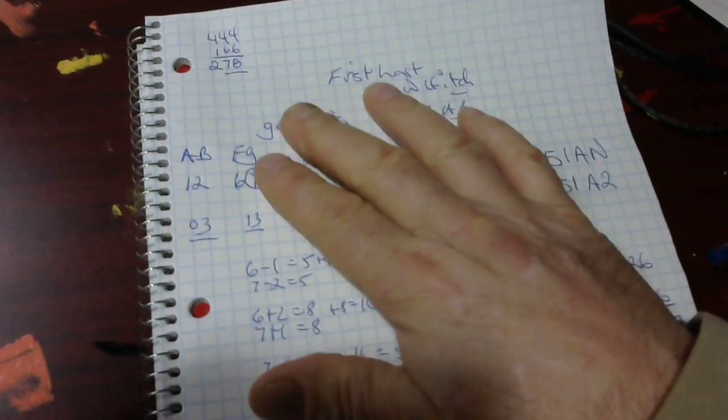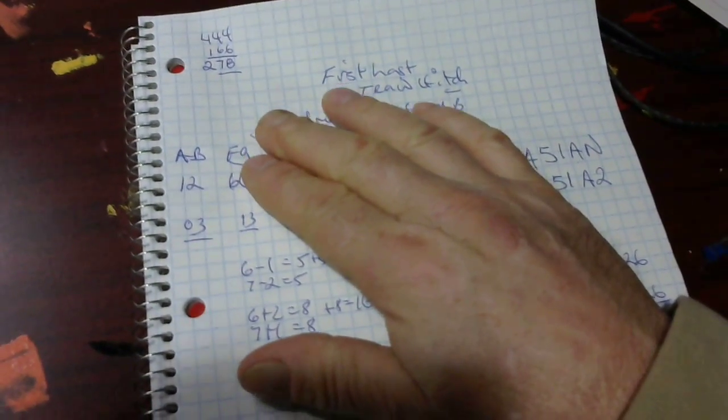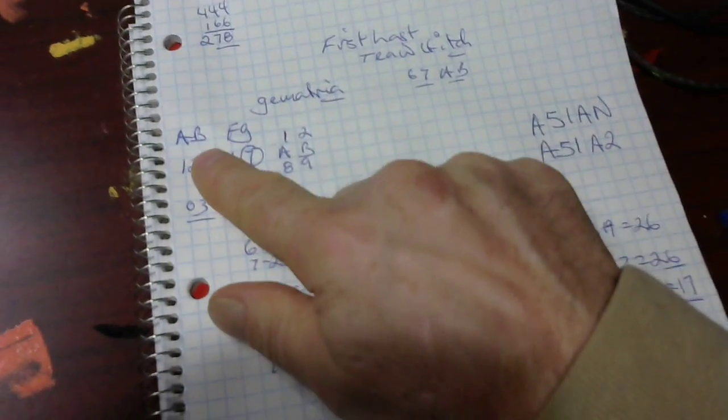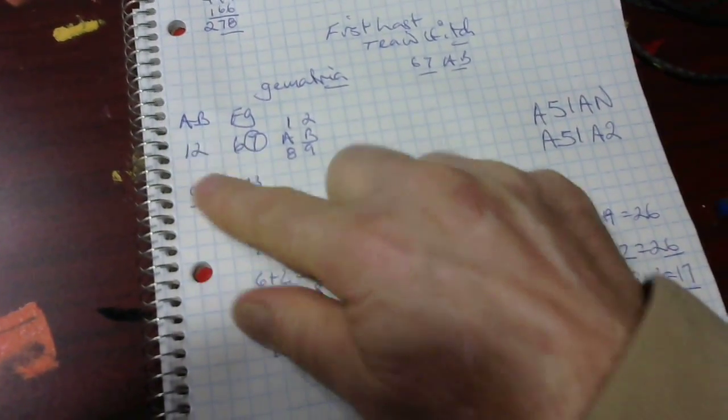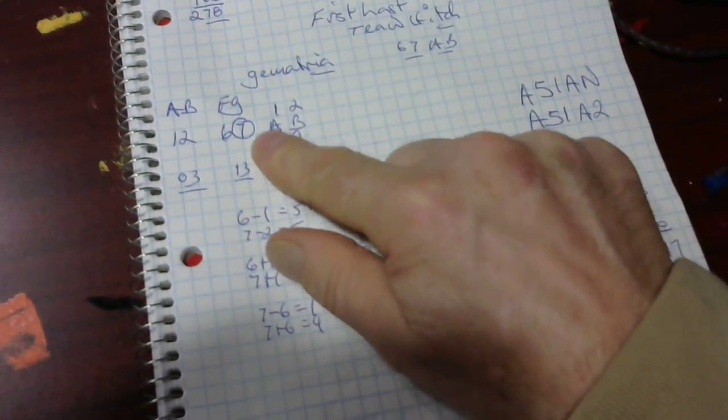In this small video we're going to look at what I call the gematria scale. Inside the gematria scales, the first two are A and B, and they repeat themselves. Over here is eight and nine.